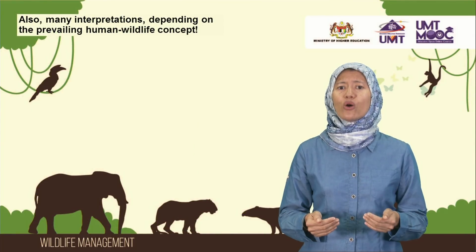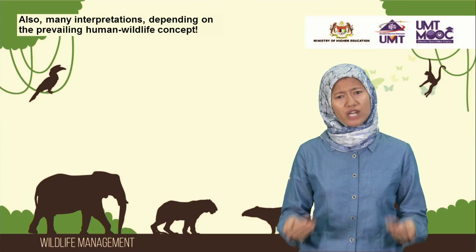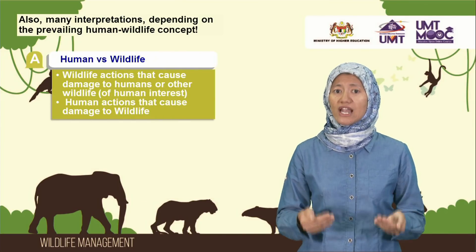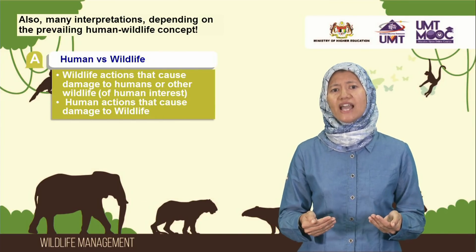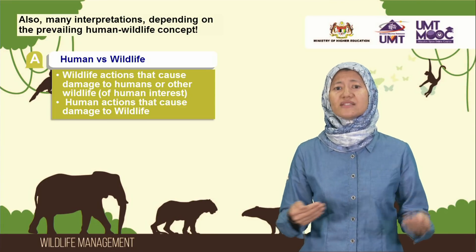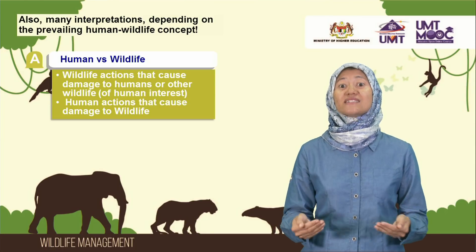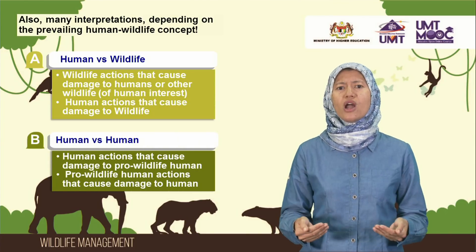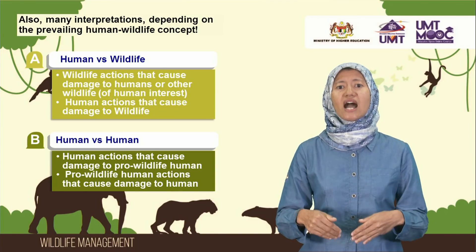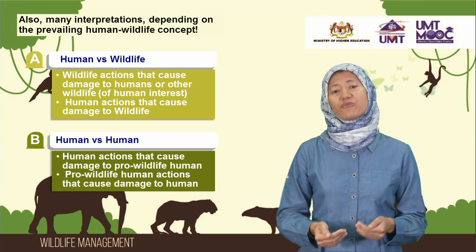Their interpretations are also divided along the two perspectives. But in general, they refer to, firstly, human versus wildlife, which applies to the damages caused by the action of one to the other and vice versa. And secondly, don't be surprised, it's about human versus human, where we consider the damaging actions of those of our species that are of extreme ends for or against wildlife protection.